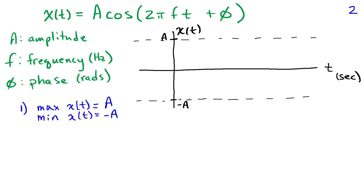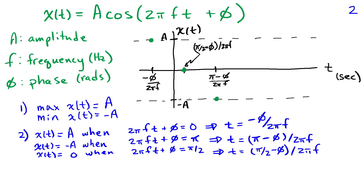The maximum value for x(t) is given by A, and that happens when the argument of the cosine is 0 or some multiple of 2π. So x(t) equals A when the argument 2πft + φ equals 0, which occurs at time t = −φ/(2πf). We can put a point at the maximum at that time.